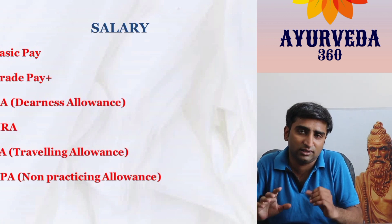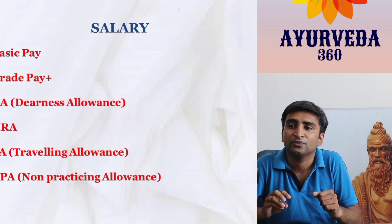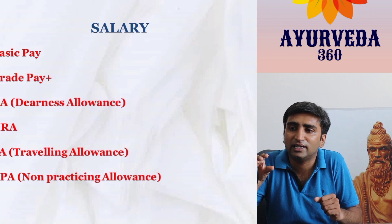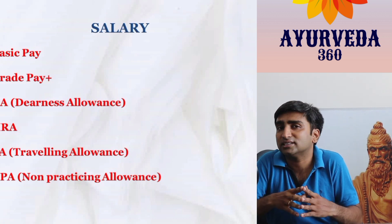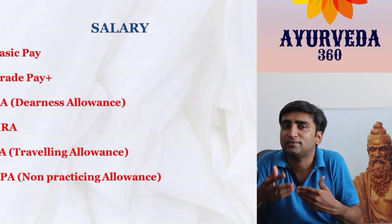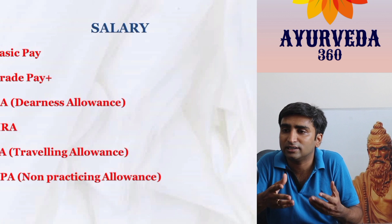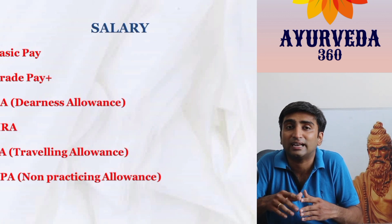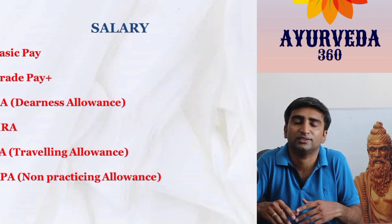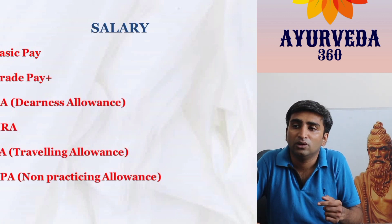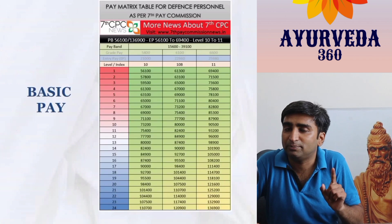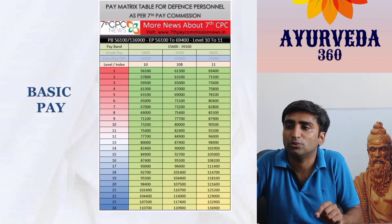The salary components are: basic pay, grade pay, Dearness Allowance (DA) which gets revised every six months, House Rent Allowance (HRA), Travelling Allowance (TA), and Non-Practicing Allowance (NPA).